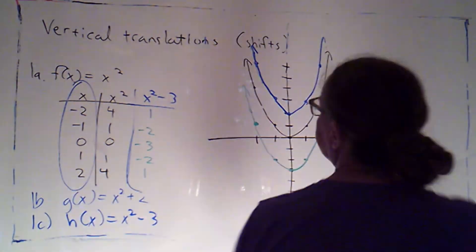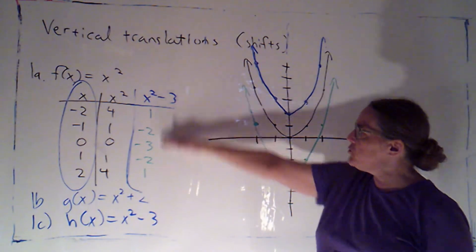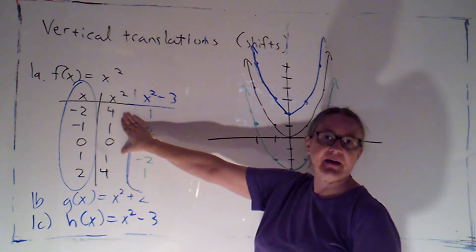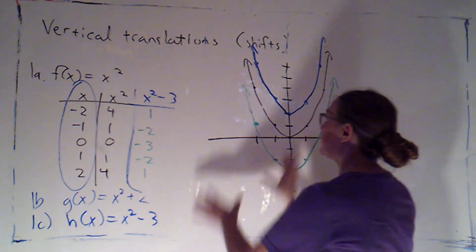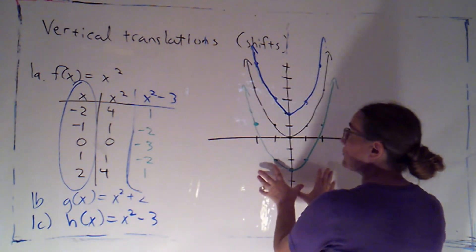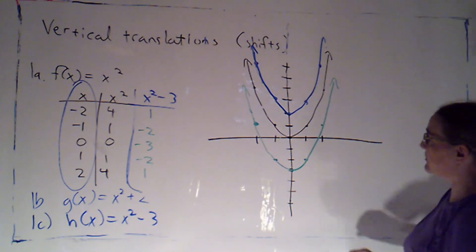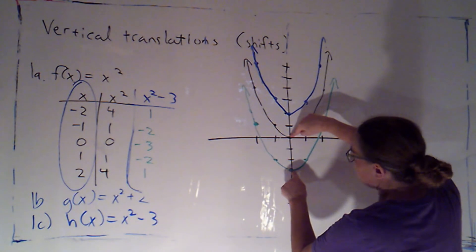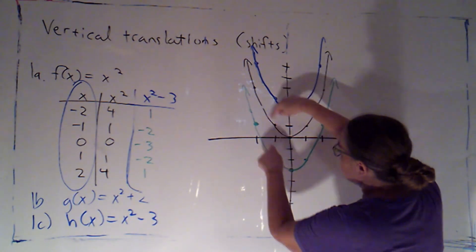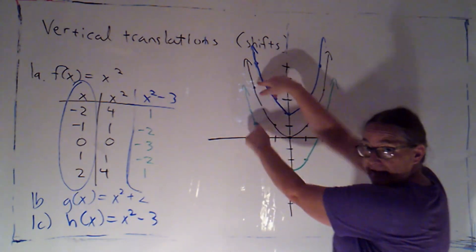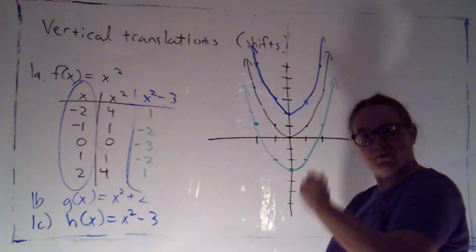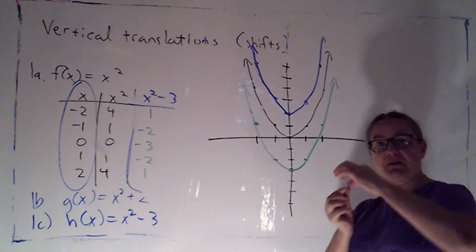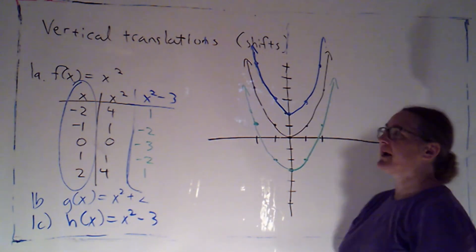I've gone ahead and filled in the table of values here. My new y values are all just 3 less than the y values we had on the parent function. And graphically, the result is that we just moved that graph 3 down. Still the same basic shape. This vertical distance here is 3. This vertical distance here is 3. So as long as I'm comparing points with the same x value, the points on this green graph are always just 3 units below the points on the parent function.